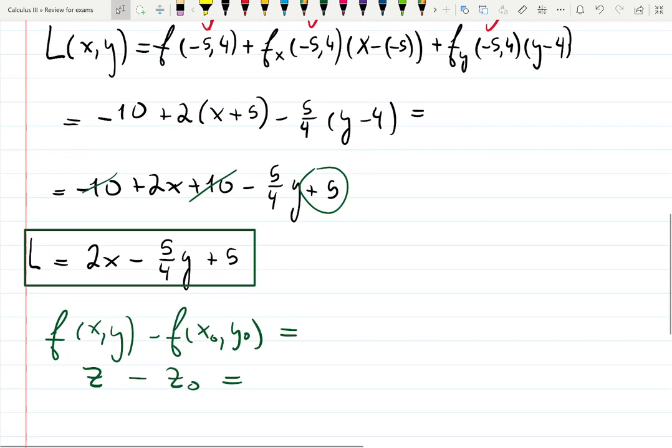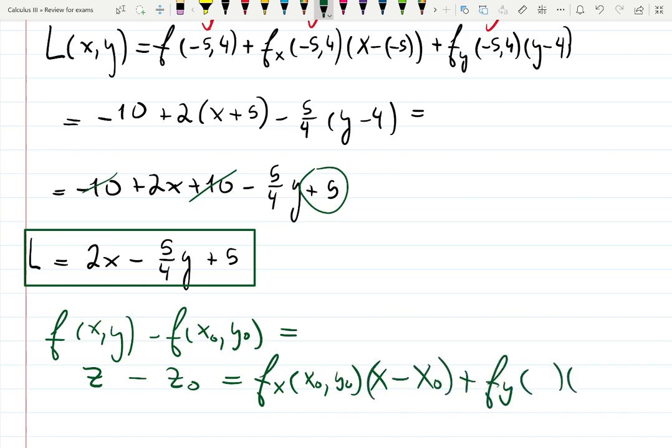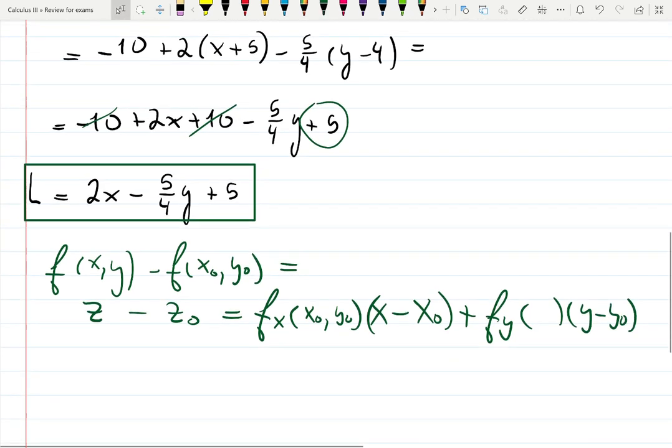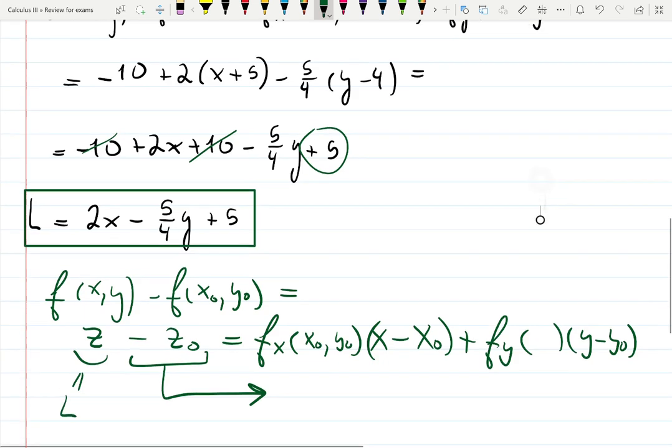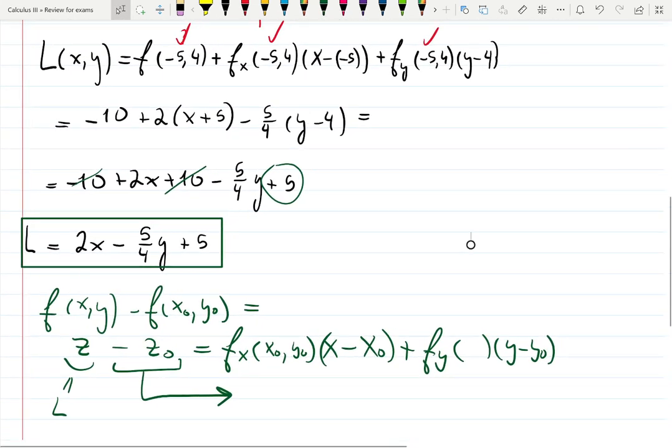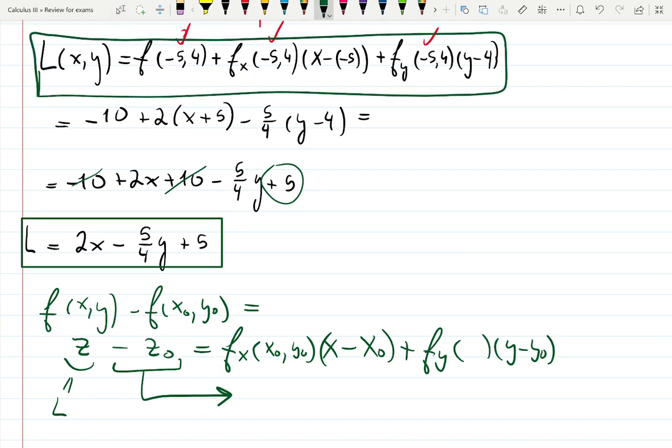So slope now is the partial derivative at the point, of course, (x₀, y₀), times (x - x₀). One more slope. Times (y - y₀), and so on. And then they moved this to the right, so it became plus z₀, and they called this L. That's how I memorize it, if it helps you. Maybe this way you will memorize this formula easier. Thank you.